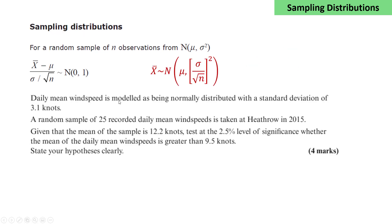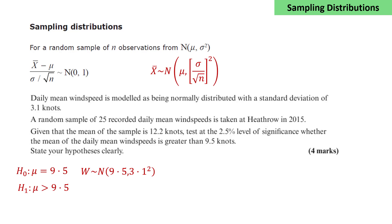Let's look at one more example. Daily mean wind speed is modelled as being normally distributed with a standard deviation of 3.1 knots. A random sample of 25 recorded daily mean wind speeds is taken at Heathrow in 2015. Given that the mean of the sample is 12.2 knots, test at the 2.5% level of significance whether the mean of the daily mean wind speeds is greater than 9.5 knots. State your hypotheses clearly. The null hypothesis is that mu equals 9.5, modelling wind speed as normal with mean 9.5 and standard deviation 3.1. The alternate hypothesis is that mu is greater than 9.5, so we'll be doing a one-tailed test.